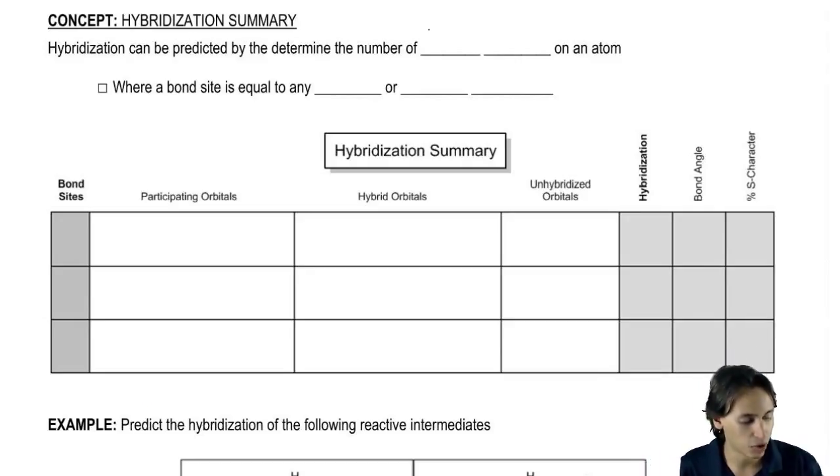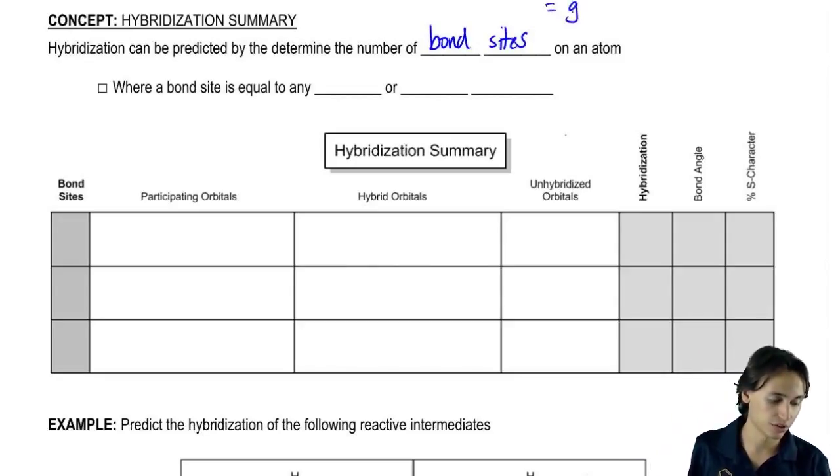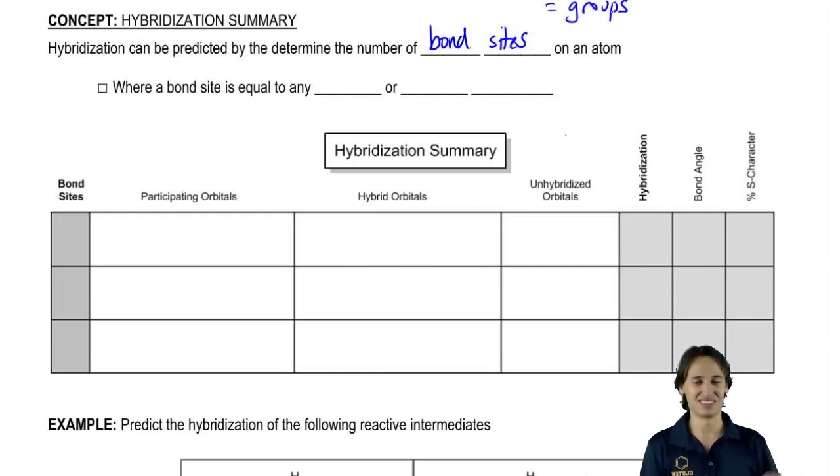It can be predicted by the number of what we call bond sites on an atom. And bond sites, just so you know, some people refer to these as groups, but I think groups is a really general word. It's easy to forget what a group is, but a bond site is really way more specific.